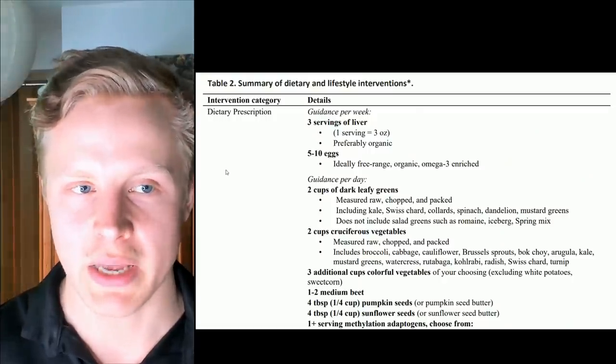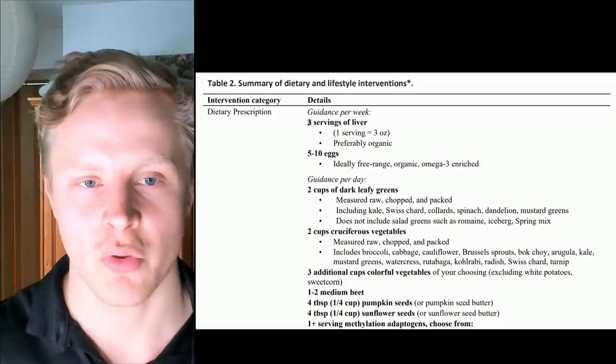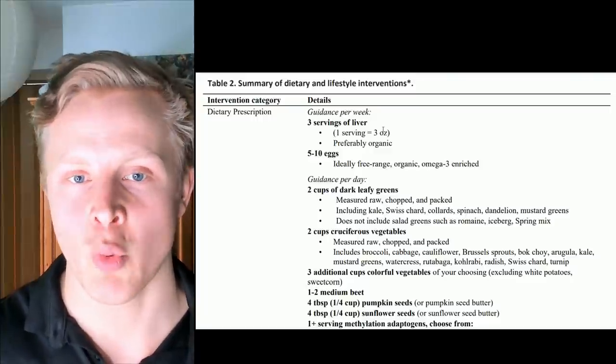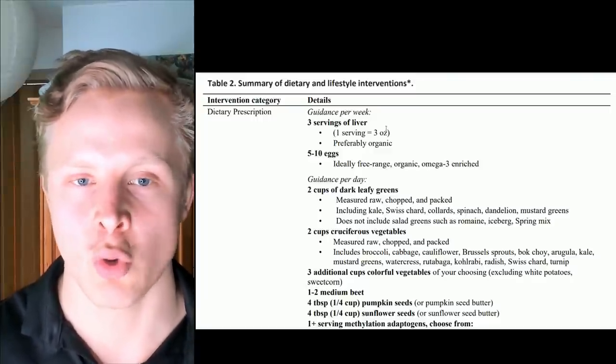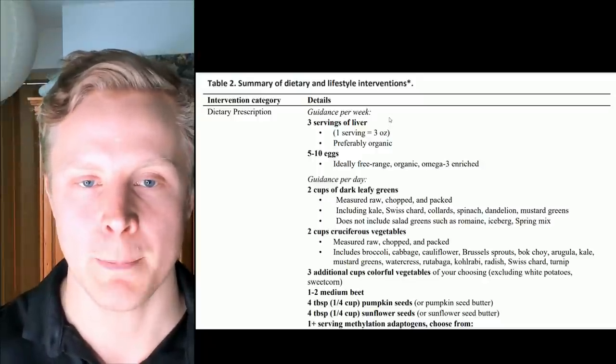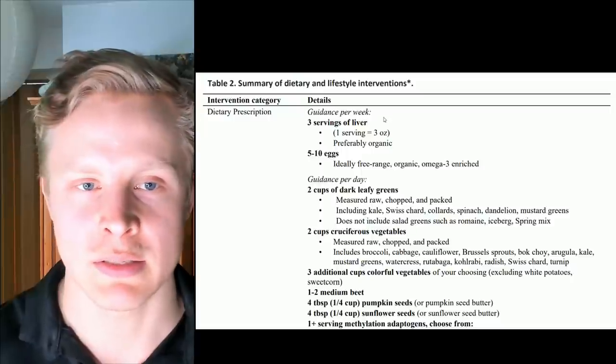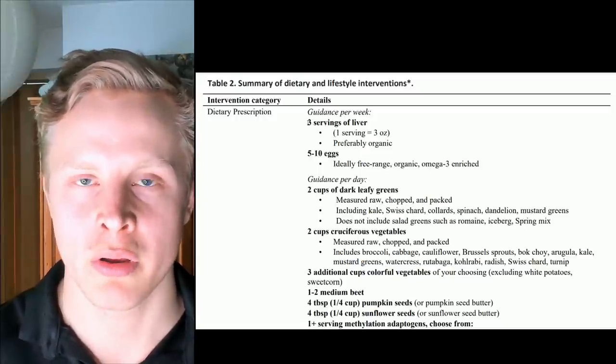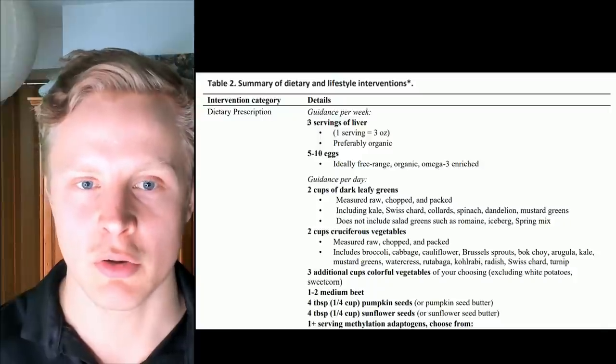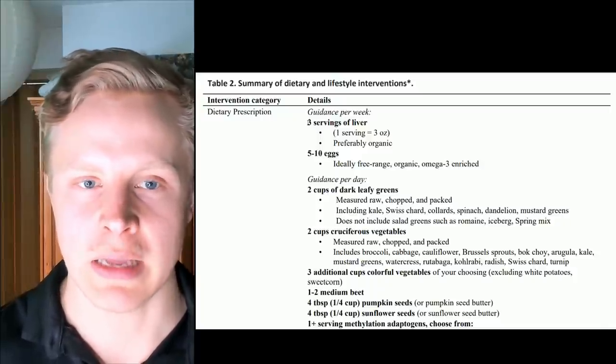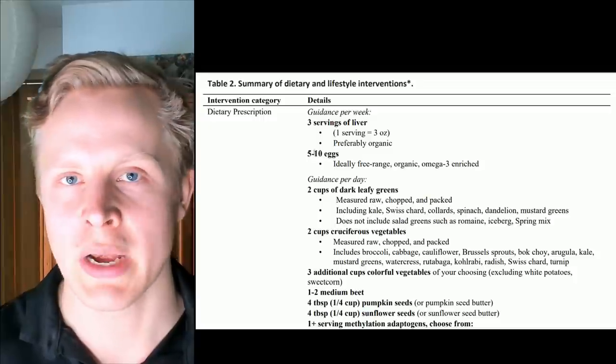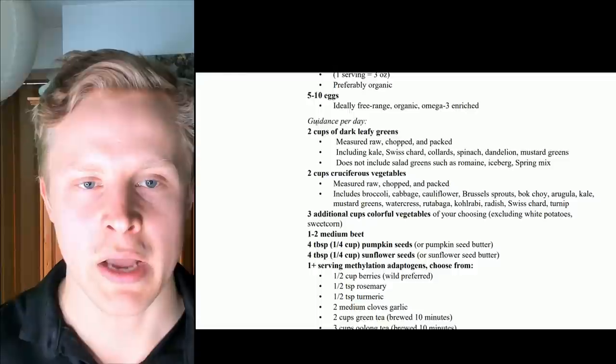So here's actually the specific diet that they were recommended to follow. For the entire week, the guidance was three servings of liver, and one serving being three ounces. So they got nine ounces of liver per week, which is actually pretty good. That rounds up to a little bit more than one ounce per day, which is perfect. You can cover almost all of your micronutrient needs with just an ounce of liver every day. It's quite awesome to see that these authors included liver into this diet. In addition to that, five to ten eggs per week, which is also almost one egg, maybe one and a half eggs per day.